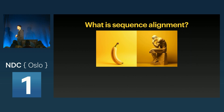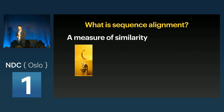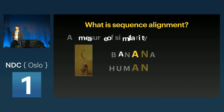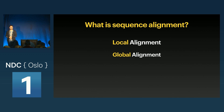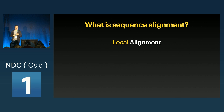So what does it mean to align two sequences to each other? Basically, we try to find the similarities between them — it's a measure of similarity. Taking two random sequences like banana or human, we can see that the longest common subsequence is 'AN', at least to my eyes. In general, we have the concepts of global and local alignment. In global alignment, you compare the entirety of the strings — the entire banana genome to the entire human genome. In local alignment, we identify local regions of similarity. In this talk, we focus on local alignment because that's what Smith-Waterman does.